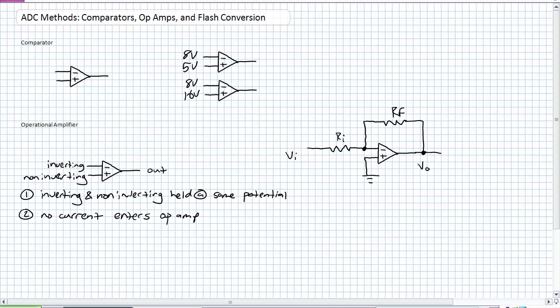Before we go into our first analog to digital conversion method, namely flash conversion, we're going to review some basic fundamentals. The first we're going to do is review the operation of the basic comparator. What's a comparator? It just compares voltage.